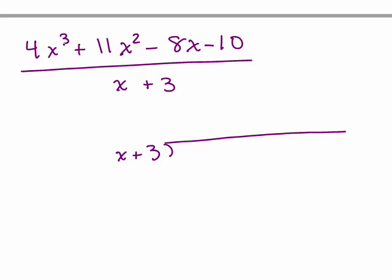Once in a while you'll have a term missing, like if this was 4x³ + 11x² - 10, and you'll have to write plus 0x. It's like a placeholder, just like when you write 105, you have to put the 0 between the 1 and the 5. In this case, they're all there, so we have 4x³ + 11x² - 8x - 10.